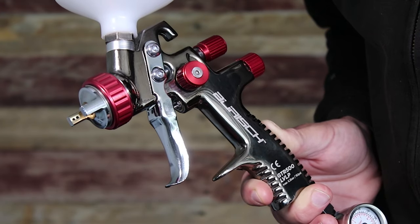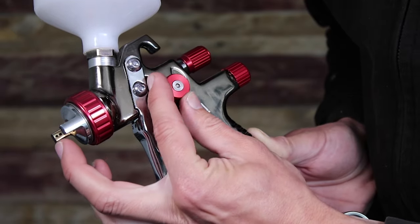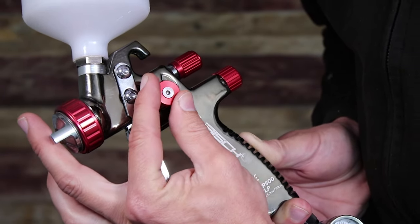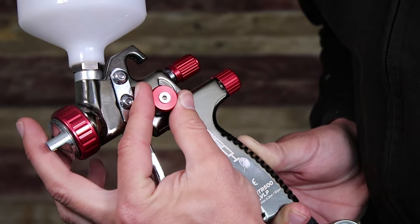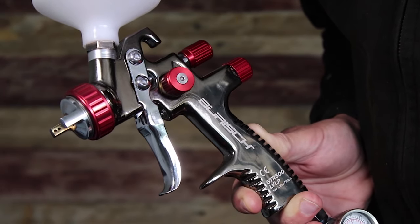This is the fan adjustment on the spray gun. Most of the time we'll want this to be fully open, which is achieved by turning the knob anti-clockwise until it stops. This will create the largest spray fan achievable with this gun and is how you'll want it to be set in most instances.